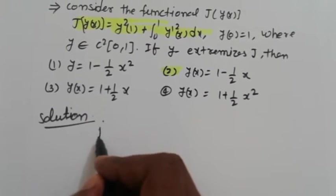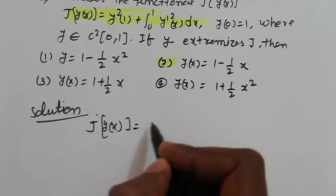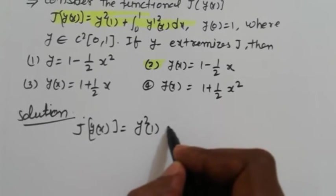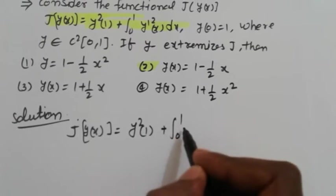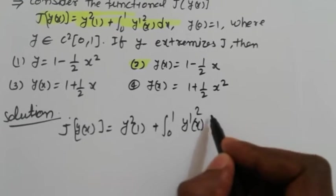So write down J[y(x)] here is equal to y² plus integral from 0 to 1 of y'(x)² dx.